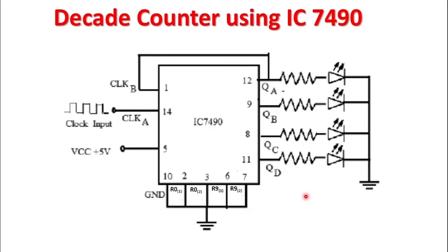This is the circuit diagram of IC 7490 configured as a decade counter. You can see that the clock pulses to be counted are given to clock A, that is, the input A pin. As already explained, the output of the first mod 2 counter, flip-flop A, is obtained on QA, and QA is connected to the input of the mod 5 counter — that is, input B or clock B. This makes the counter act as a mod 10 counter. The 4-bit output is obtained on pins QA, QB, QC, and QD, where QD is the MSB and QA is the LSB.